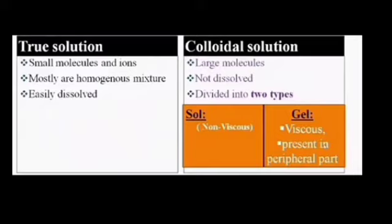When we talk about colloidal solutions, there are large molecules, non-dissolved in water, and heterogeneous in nature. There are two types of solutions. Colloidal solutions are called sol and gel. Sol is non-viscous. The gel is viscous. The gel is present in peripheral parts of the cell. In addition, it is incompletely soluble in water.